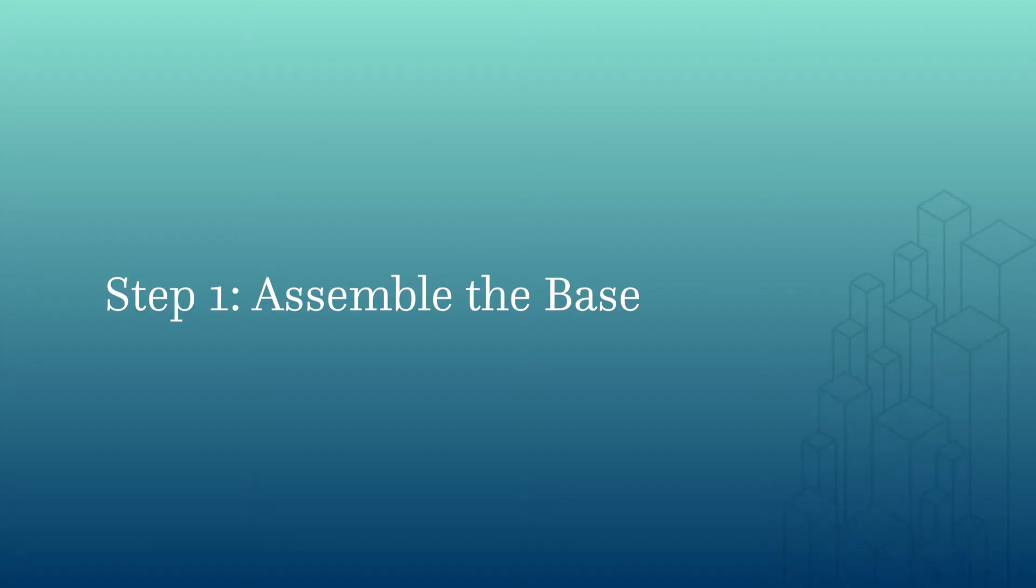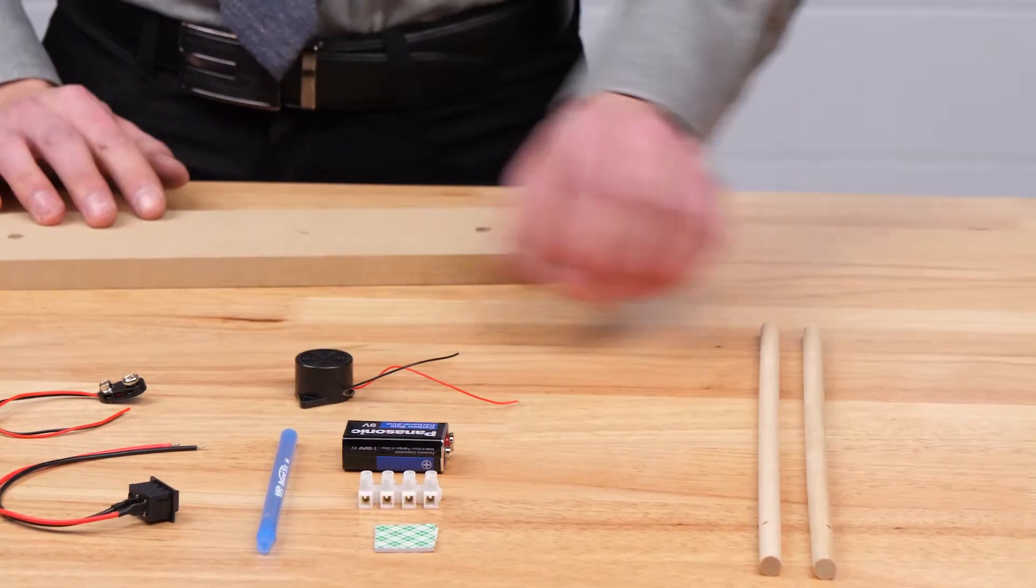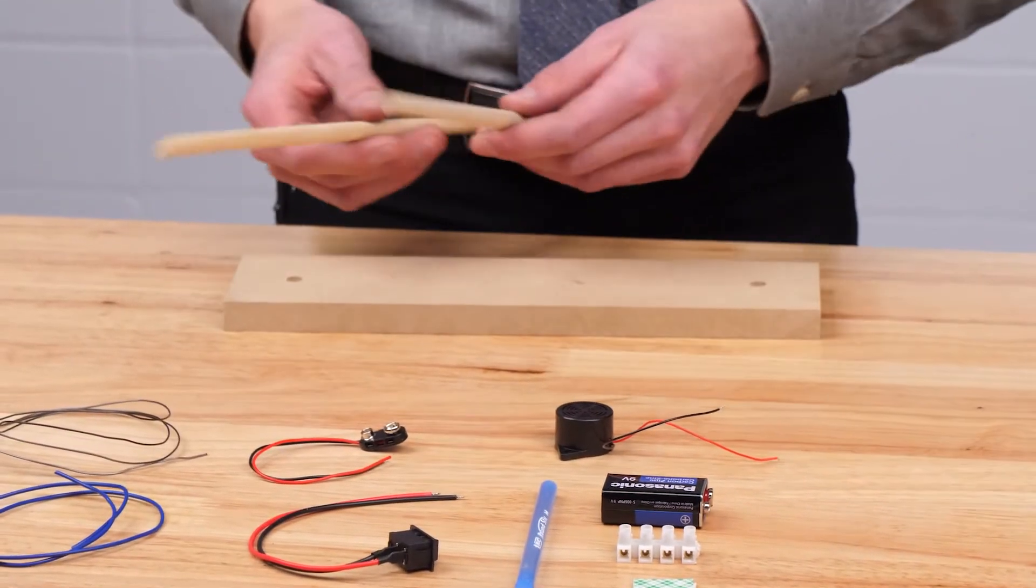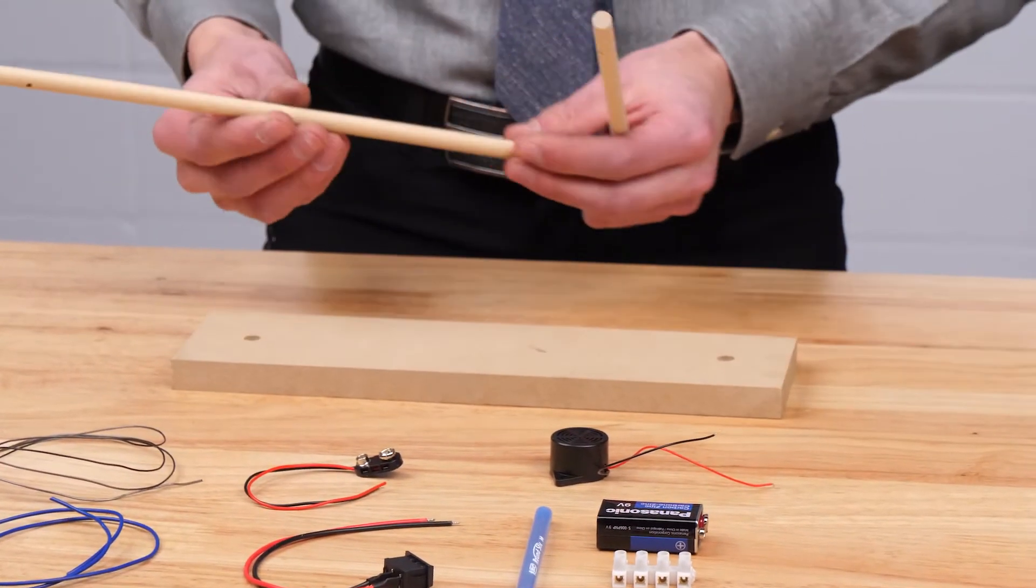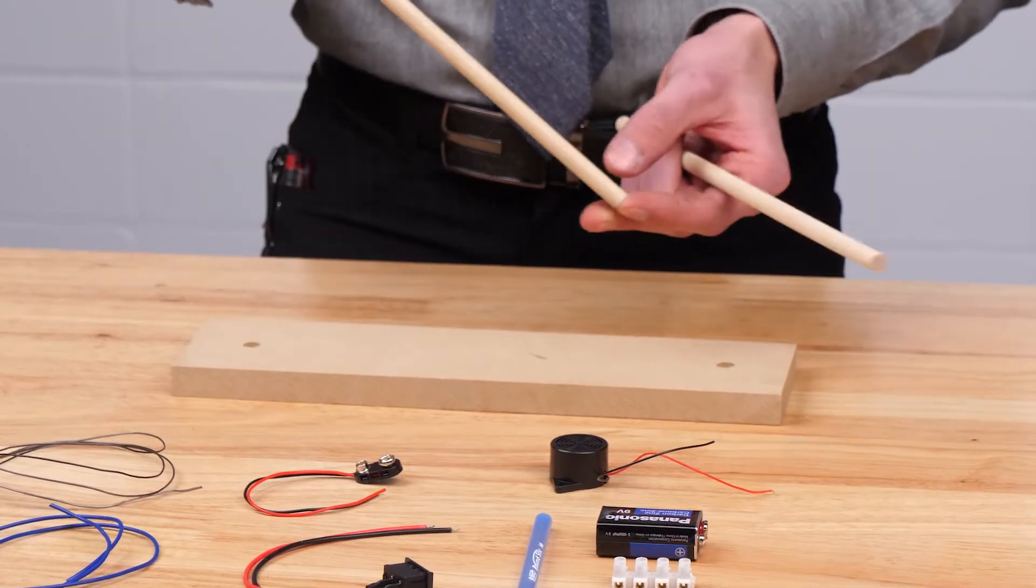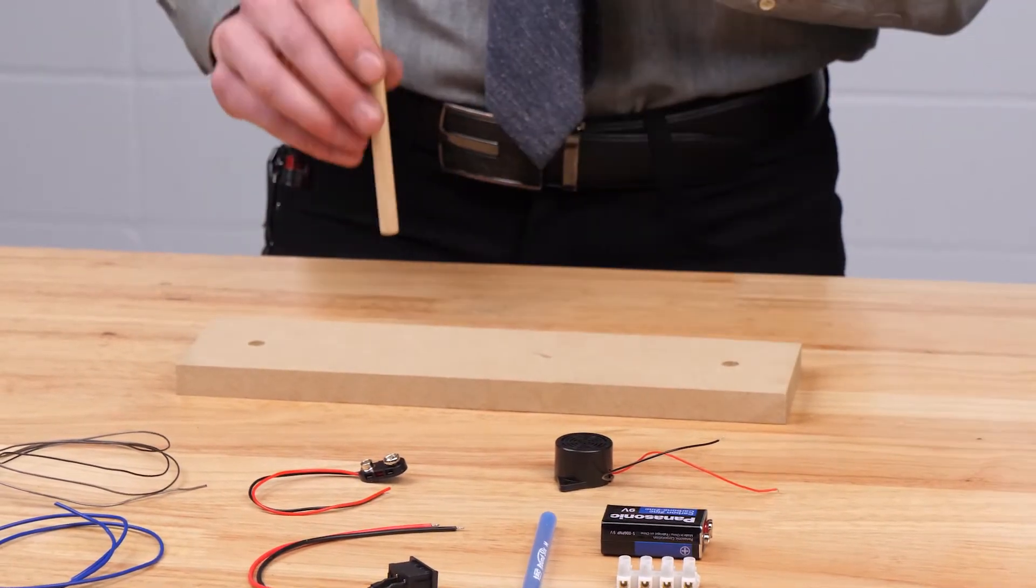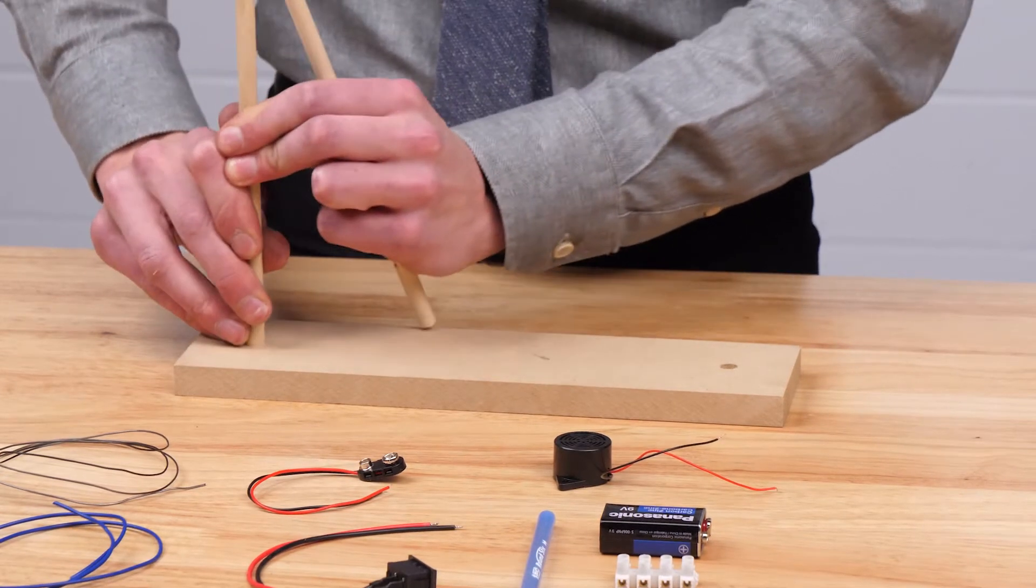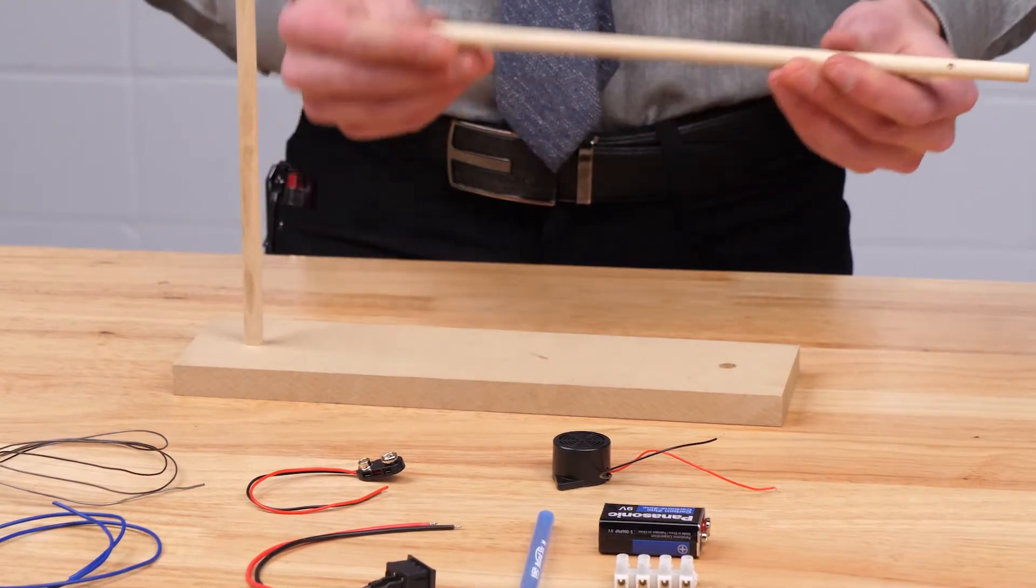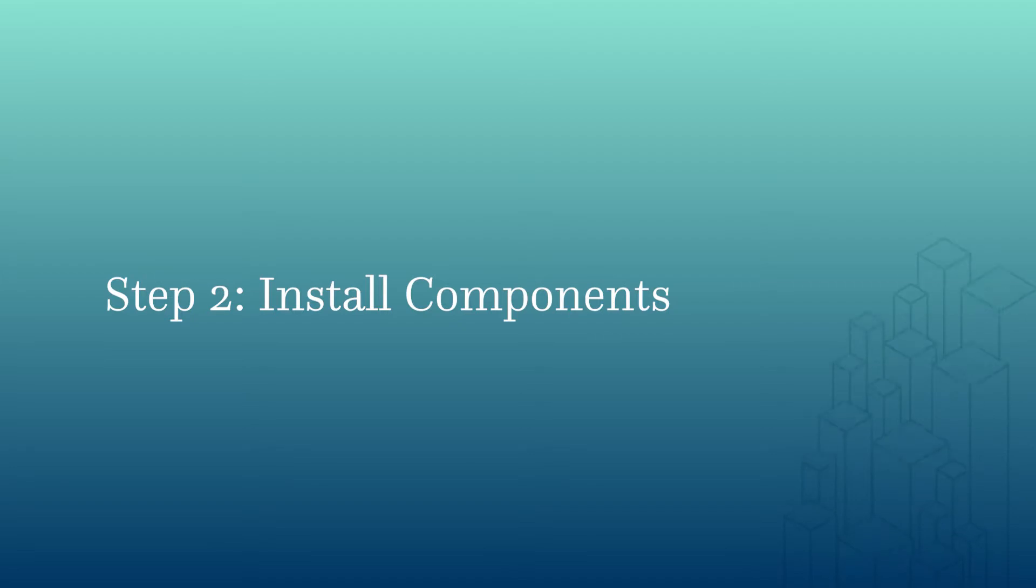To start, we're going to take our base plate and the two provided wooden dowels. The first step is to install the dowel with only one hole so that the hole is on the top, and we're just going to slide it into the base. The second one has two holes, so the orientation doesn't matter.